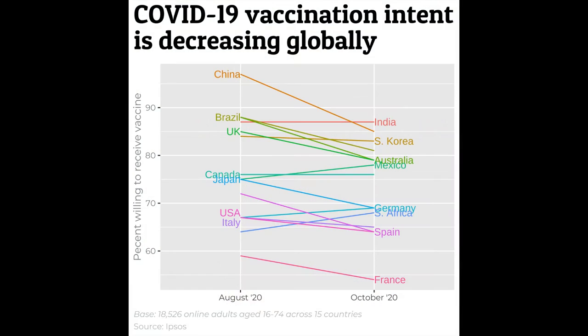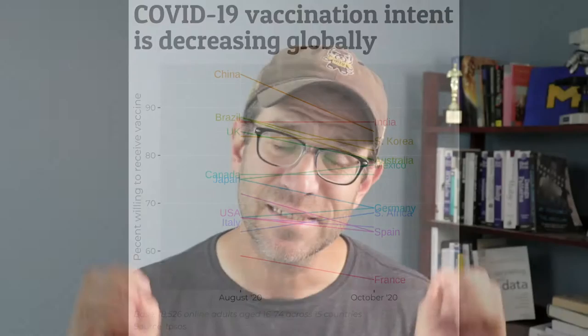I have a slope plot with 15 lines for 15 countries, indicating the people in those countries' willingness to receive the COVID-19 vaccine when they were asked about this in August and October of 2020. As you can see looking at this figure, the labels for those countries kind of overlap with each other. We've seen how we can use geom_text to separate them using nudge arguments and position arguments. What I want to do in today's episode is take our labeling up a notch.